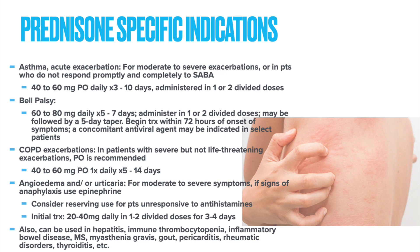For moderate to severe urticaria, prednisone may be indicated. It's recommended that we reserve steroids for those patients who do not first respond and improve with antihistamines. Of course, if there are signs of angioedema or if anaphylaxis is a concern, then absolutely epinephrine is required. For prednisone dosing with urticaria resistant to antihistamines: 20 to 40 milligrams of prednisone daily, divided into one or two doses a day, generally for three to four days.